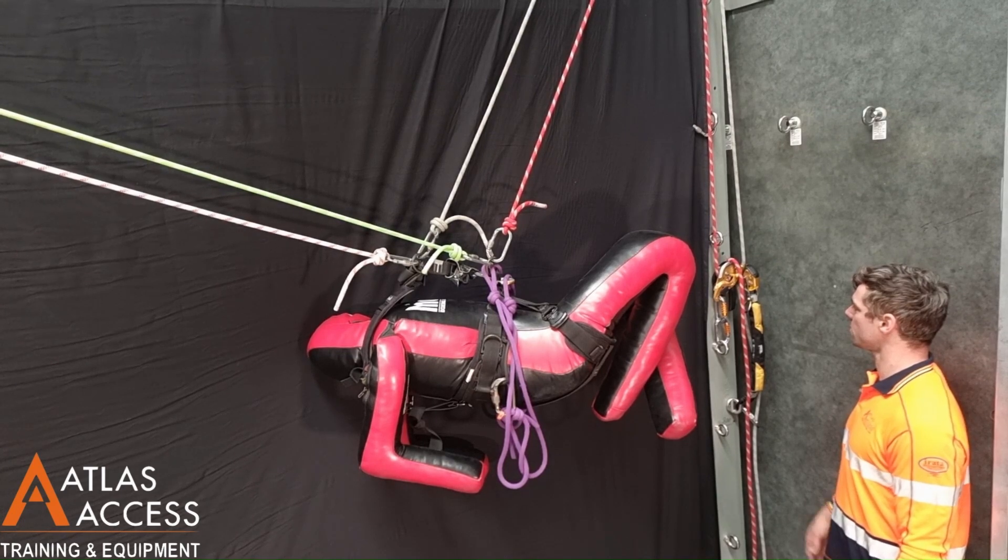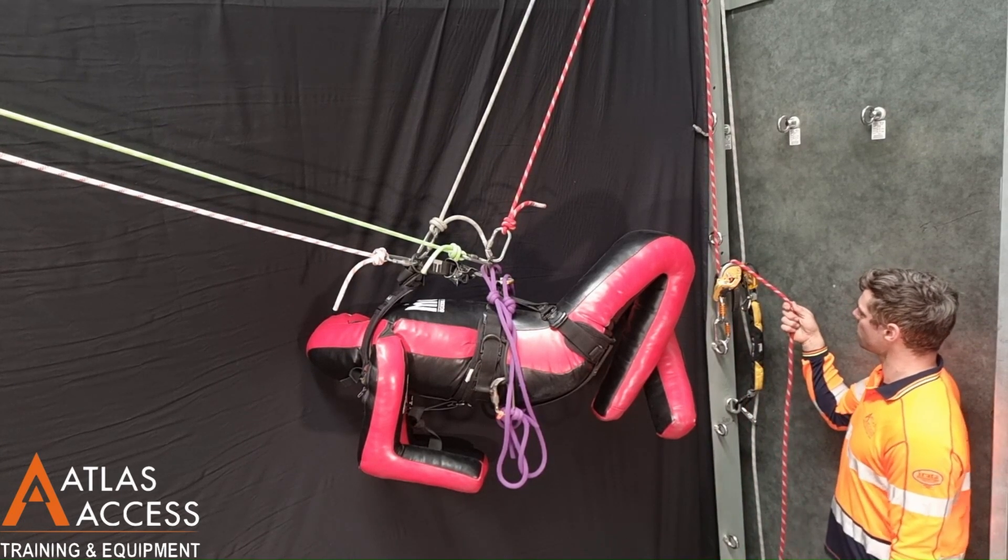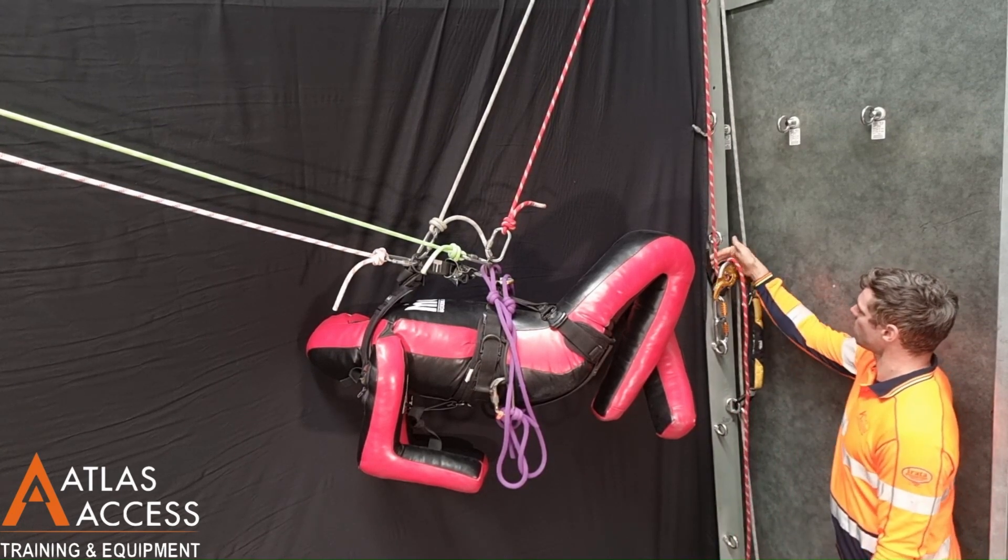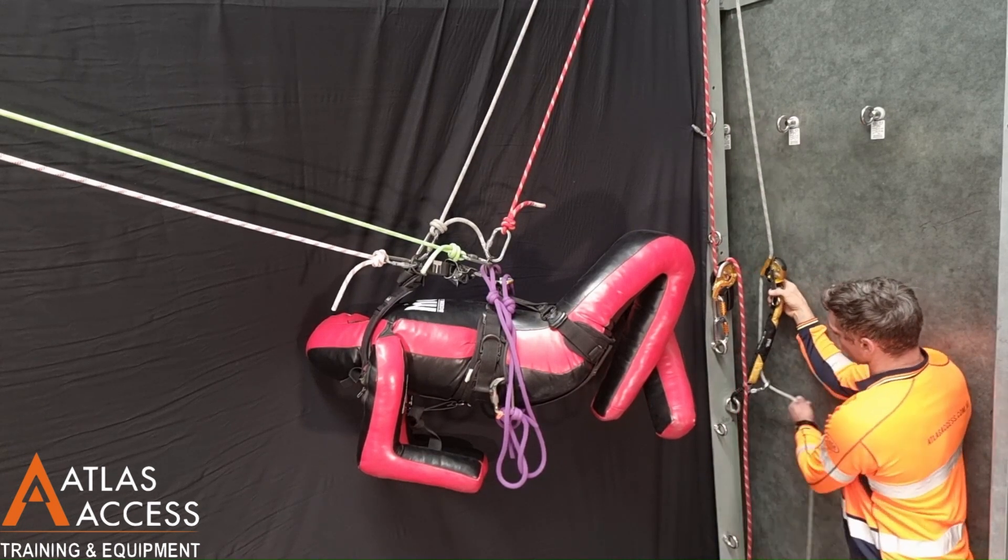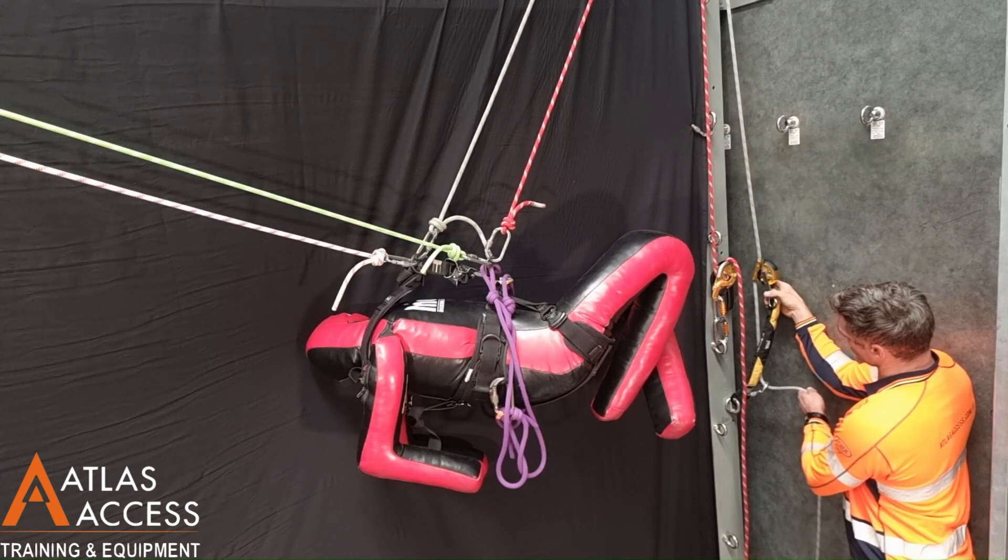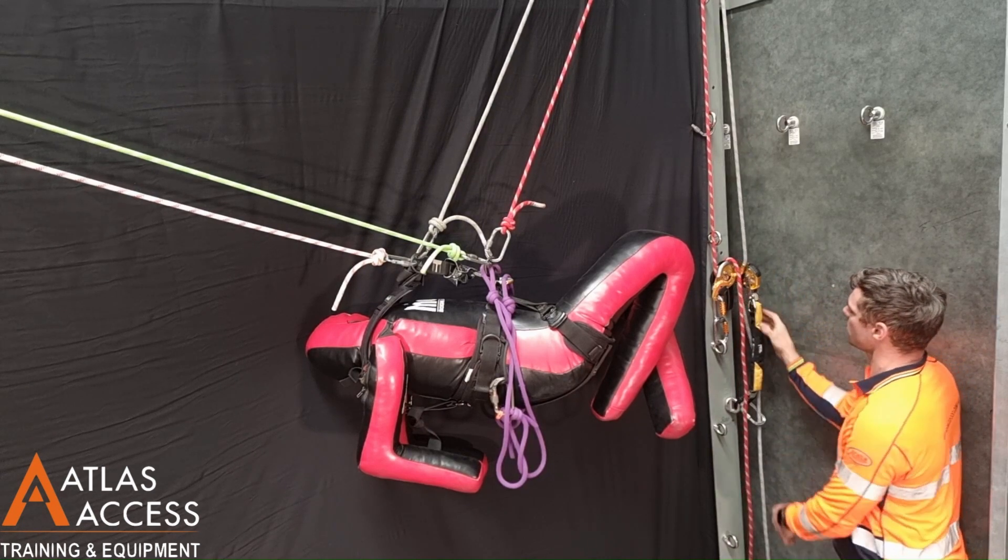The basic setup includes a rope adjustment device like a descender and another device. Here we are using an ASAP. The haul and backup lines are running through pulleys above and redirected to the load.